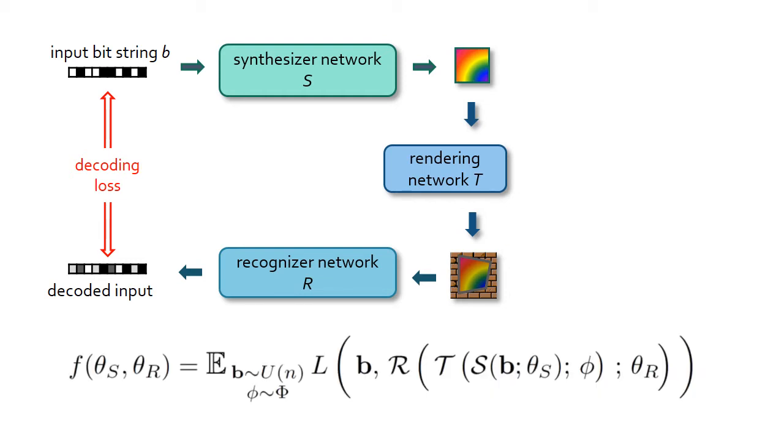All three networks are composed of piecewise differentiable layers, which allows us to train the parameters of the synthesizer and the recognizer jointly in an optimization process based on stochastic gradient descent using backpropagation.